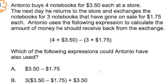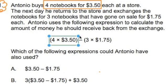Now let's read it over again and let's pull out some important information. First off, he buys four notebooks for $3.50. That's what this first part means: four, that's the four notebooks each for $3.50. And the product of four times $3.50, this gets the total amount that Antonio originally paid.